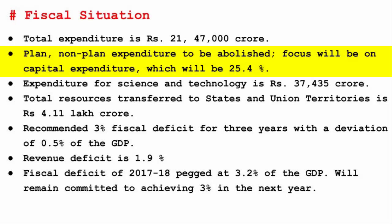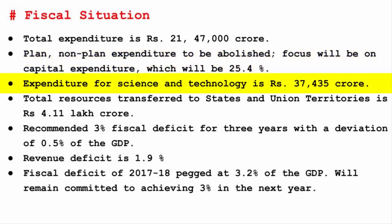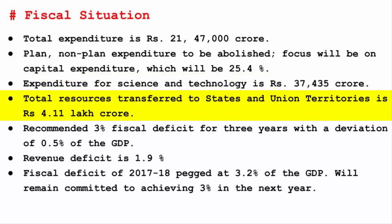The expenditure for science and technology is Rs. 37,435 crore, with the Department of Space and Department of Atomic Energy getting the maximum allocation. The Department of Space has shown success with projects like the Mars Orbiter Mission, and the Department of Atomic Energy is showing success in nuclear power projects. Total resources transferred to states and union territories is Rs. 4.11 lakh crore, including share of taxes, grants-in-aid, loans, and many other centre-state-sponsored schemes.